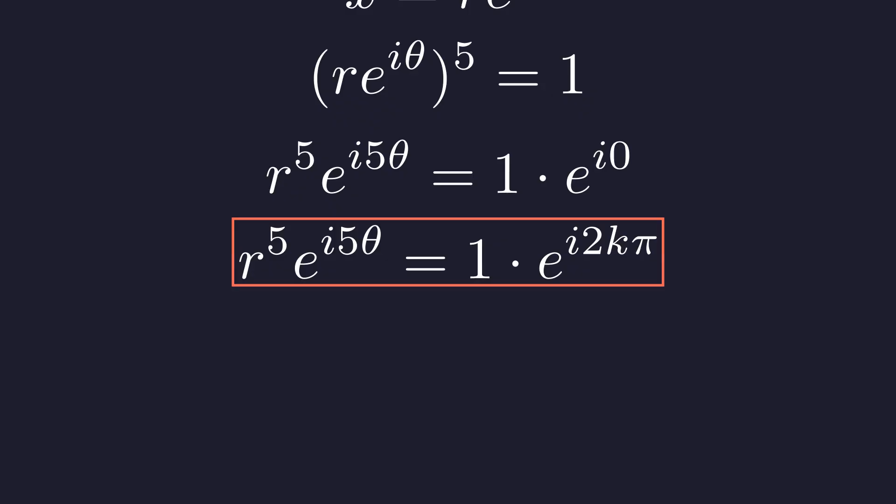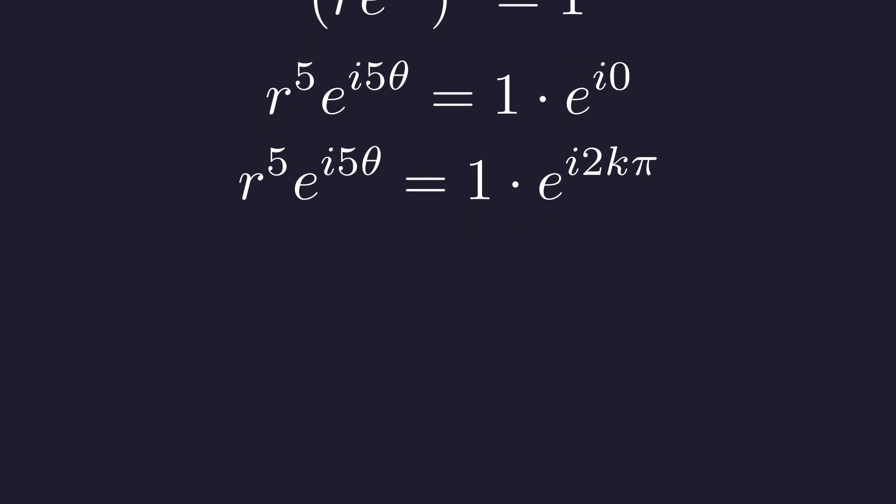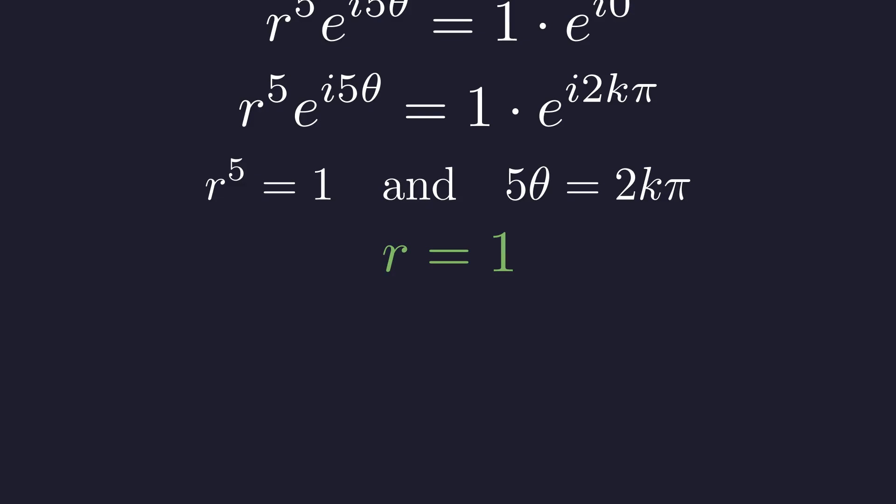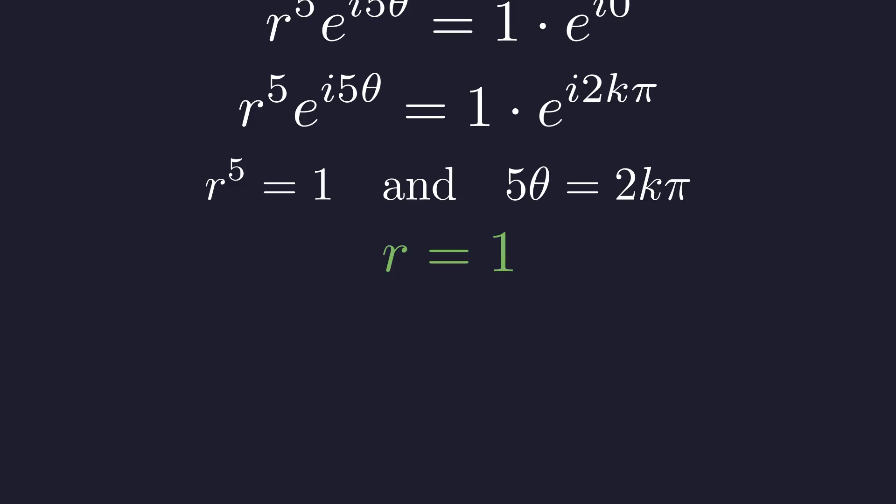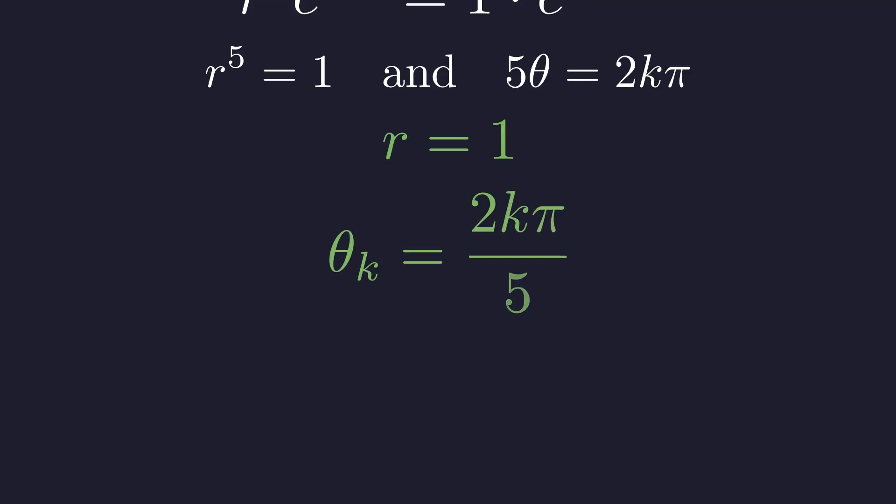For these two complex numbers to be equal, two conditions must be met. Their magnitudes must be equal, and their arguments must be equal. This gives us two separate equations to solve. The first equation forces the radius to be 1, since the fifth root of 1 is 1. The second equation gives us the formula for our five distinct angles.